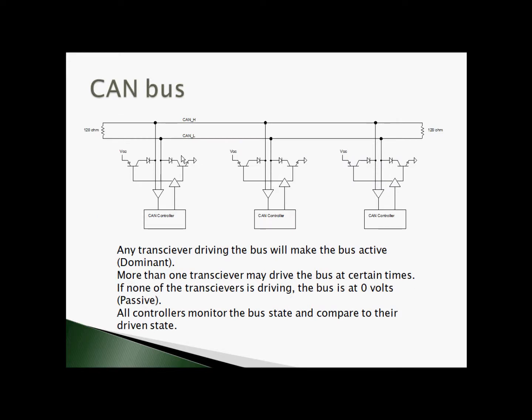Here's an example of a CAN bus with three nodes on it. Note the 120 ohm termination on each end of the bus. This is meant to match the impedance of the bus itself, which for a nominal 22 gauge twisted pair is very close to 120 ohms. Note that with multiple transceivers, more than one can be driving at a time. If any are driving the bus, that's considered the dominant state, and it overcomes the passive state of any nodes that are not transmitting.